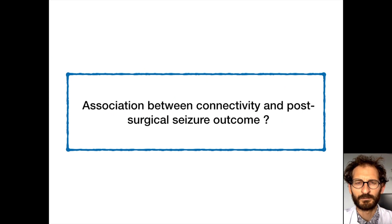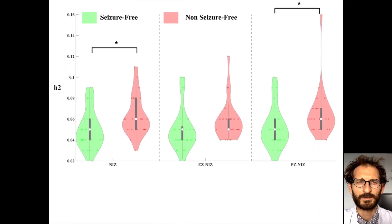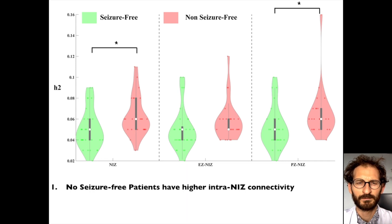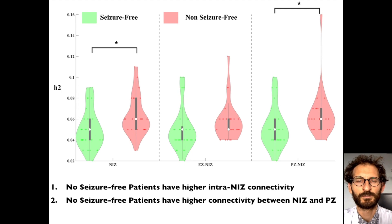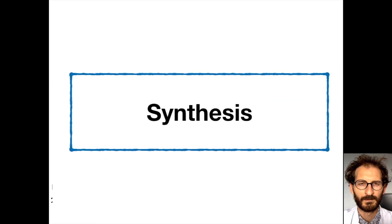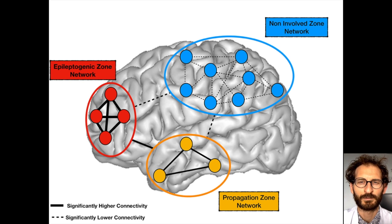What is the association between our connectivity results and post-surgical seizure outcome? We found a clear difference between seizure-free and non-seizure-free patients after surgery, with non-seizure-free patients having higher intra-non-involved zone connectivity and higher connectivity between the non-involved zone and the propagation zone, suggesting a more diffuse alteration of connectivity in non-seizure-free patients. In synthesis, we found higher functional connectivity within the epileptogenic zone, propagation zone, and between the epileptogenic zone and propagation zone, and lower connectivity in the non-involved zone during the interictal state in refractory focal epilepsy.